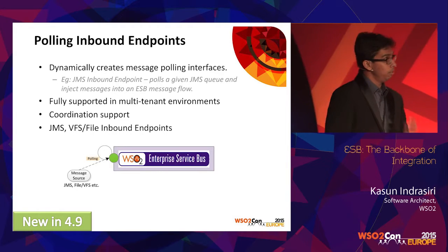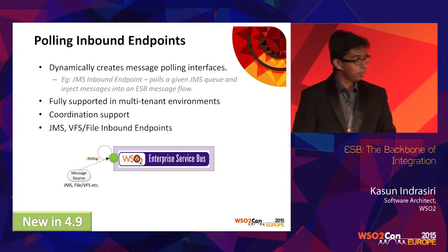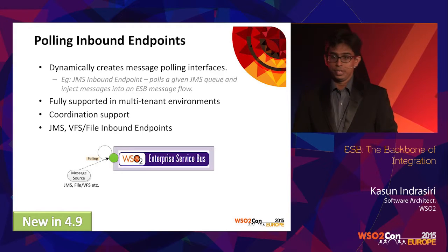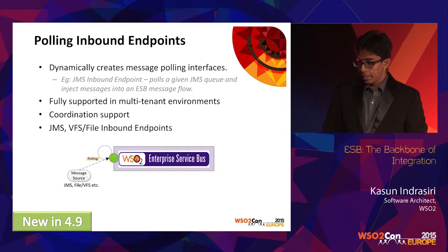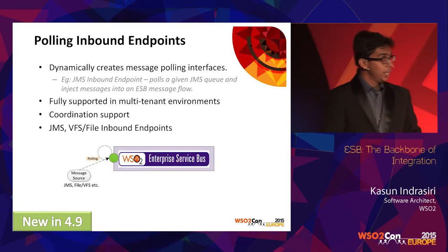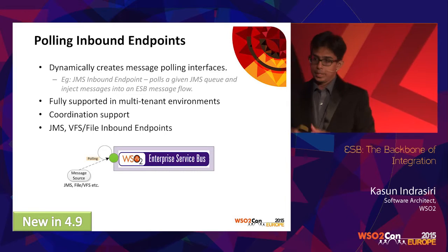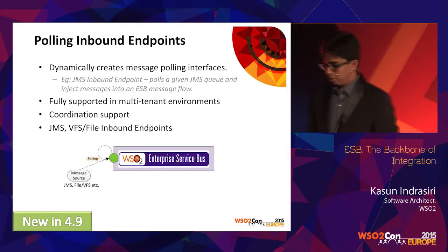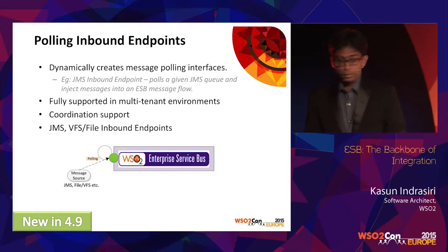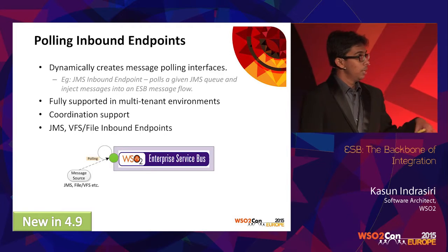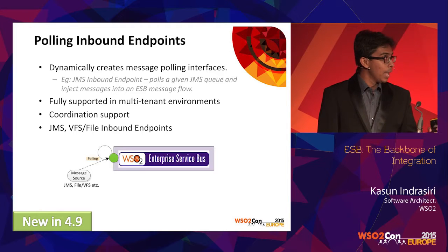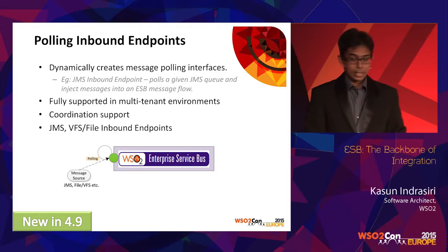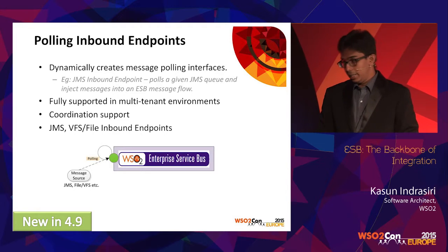With polling inbound endpoints, similar to what the existing JMS and VFS transports offer, you can dynamically poll a given message source. The message source can be a JMS queue, a file system, or an FTP location. You can dynamically create all these polling inbound endpoints, poll a given message source, and dynamically inject messages into the ESB message flow.